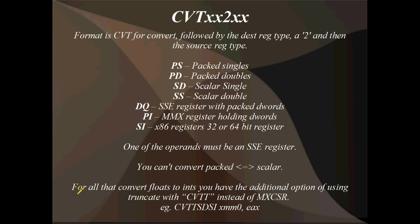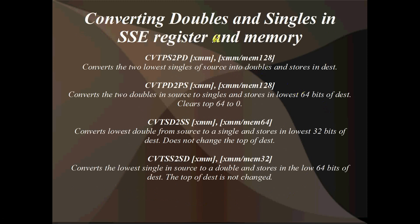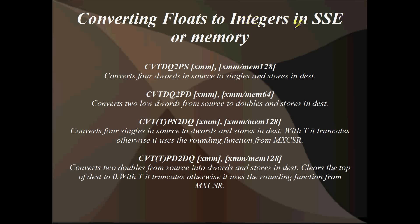For all converts, floats to ints have the additional option of using T. So here they are - converting doubles and singles in SSE registers and memory. We've got: convert packed singles to packed doubles, convert packed doubles to packed singles, scalar doubles to scalar singles, and scalar singles to scalar double. That's pretty much self-explanatory. Your packed versions convert a whole bunch of things at once SIMD-style, and your scalar ones only convert the lowest elements. Converting floats to integers: integers are called DQ - packed integers are called DQ.